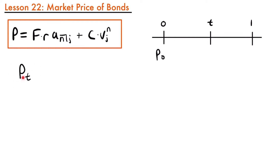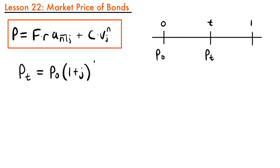This market price P sub t that we want to calculate would be found right here on our timeline. The question is: how do we calculate this market price at time t between these two coupon periods? What we can do is take this value of P sub 0, the value of the bond after the last coupon was paid, and accumulate it up to this point in time. So P sub t is equal to P sub 0 times (1 plus the yield rate of the bond) to the power of t.